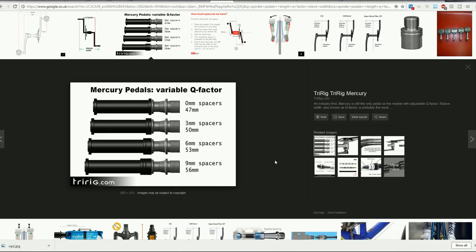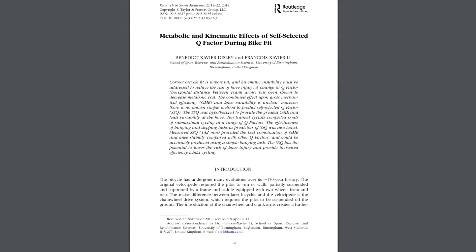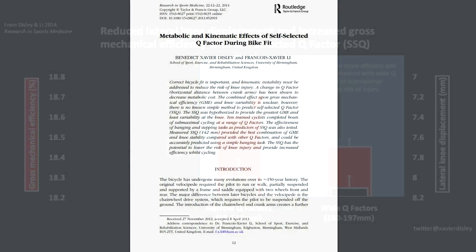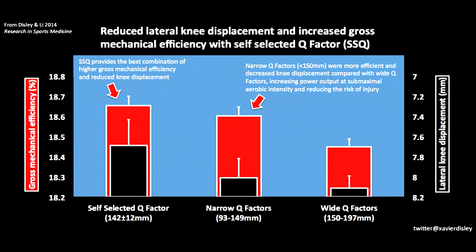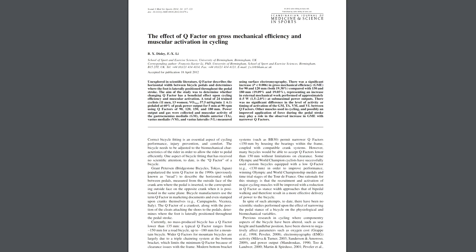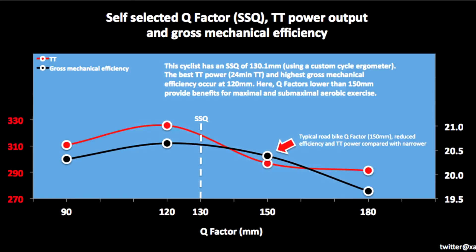Can we put some figures on comfort? Q Factor researcher Xavier Disley studied 12, then 24 riders in the lab, looking at comfort based on lateral knee displacement according to Q Factor. He found that a wider Q Factor wasn't actually the most comfortable for most people. When people self-selected their preferred Q Factor, they gravitated toward around 140 millimeters. Disley et al. found this was preferential both in terms of measured lateral knee displacement and gross mechanical efficiency — putting out power is actually better when you can select the Q Factor that suits you.